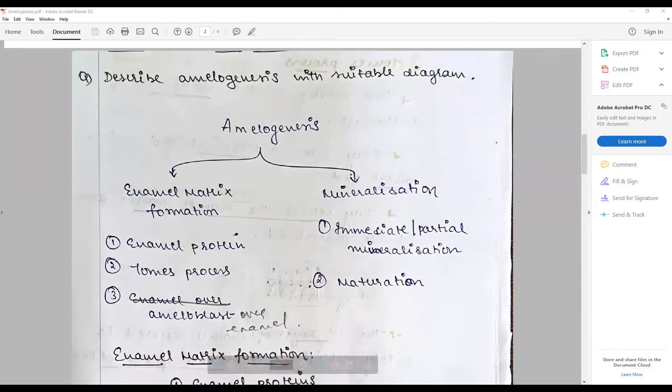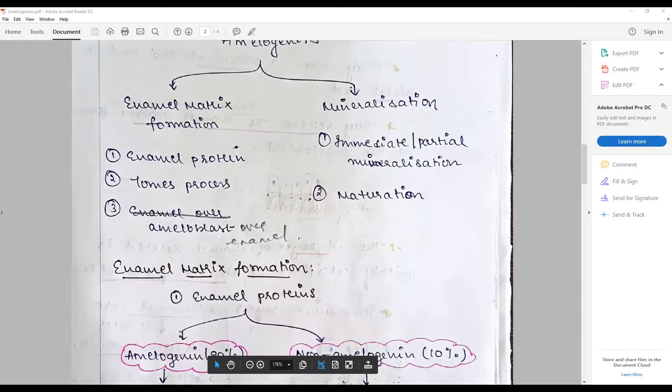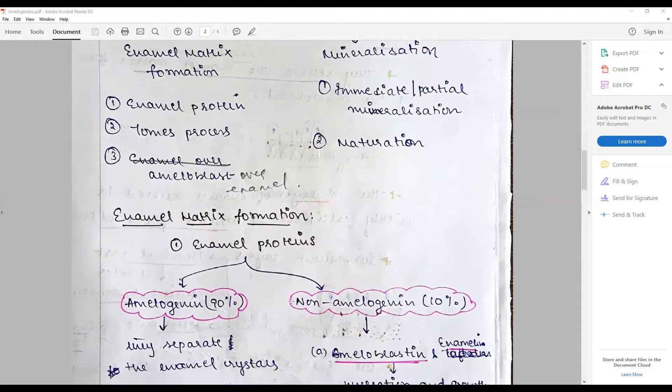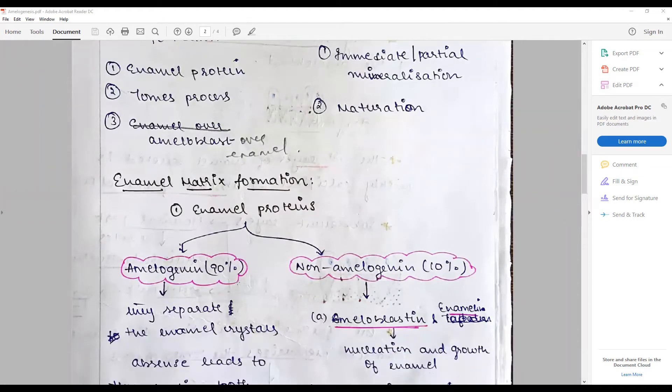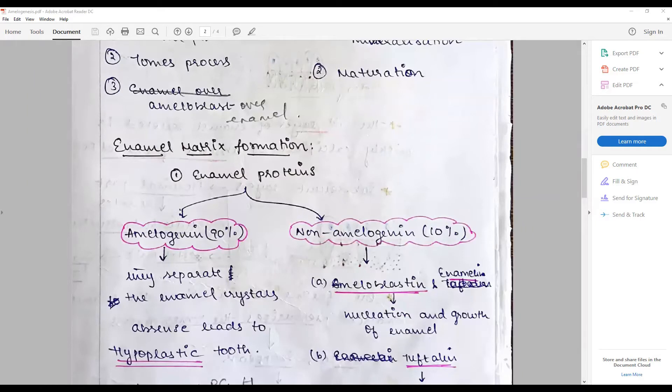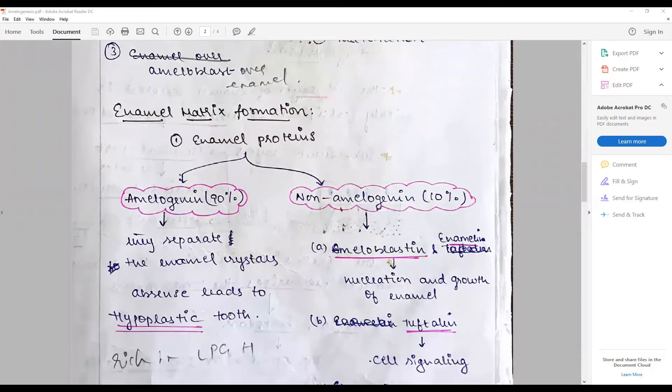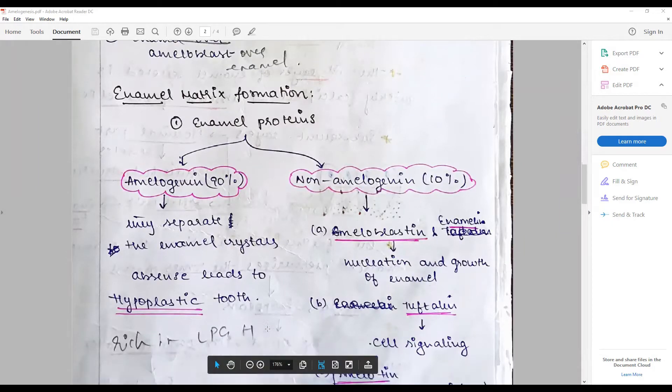Enamel matrix formation is predominantly made up of enamel proteins that are composed of two types: amelogenin and non-amelogenin. Non-amelogenins' function is to form enamel crystals, and absence of this leads to hypoplastic teeth. They are rich in glycoproteins. Non-amelogenins such as ameloblastin and enamelin are concerned with the nucleation and growth of enamel.